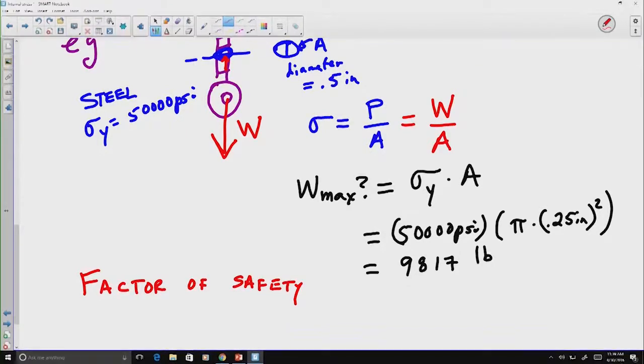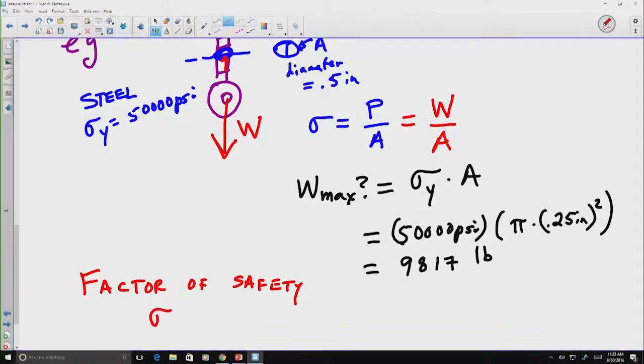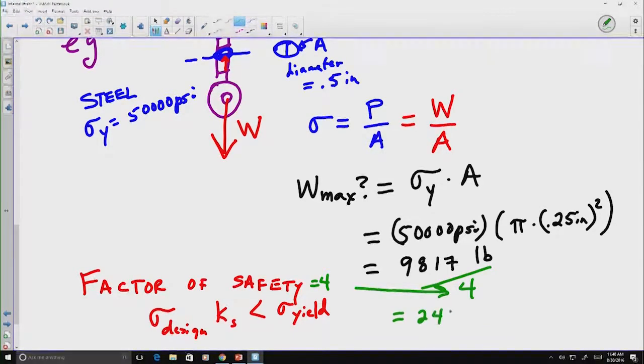In other words, we want to design with some number that's significantly less. In other words, that our design stress times some factor, we'll use it as ks here, must be less than the yield stress. So, for example, if I decided to use a factor of safety of 4, then I would end up dividing my maximum weight by this value of 4, and instead say that the maximum load we could handle is going to be 2,454 pounds.